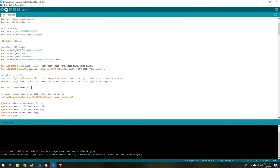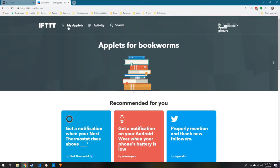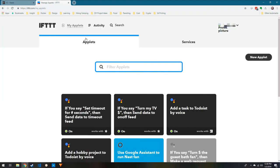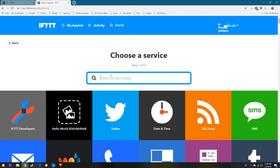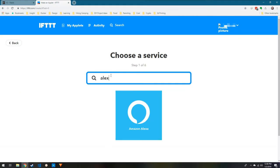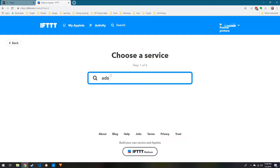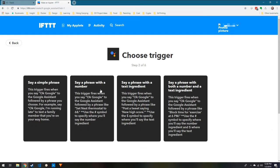Next, we're going to set up an account with If This Then That. Once you're signed up and signed in, click on My Applets, then New Applet. As you can see, you could use Alexa here, but I'm going to set this up with Google Assistant to work with my Google Home Minis.